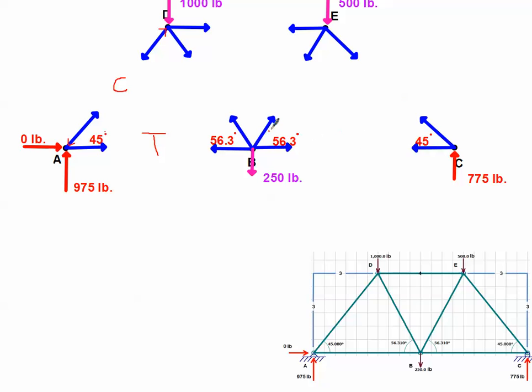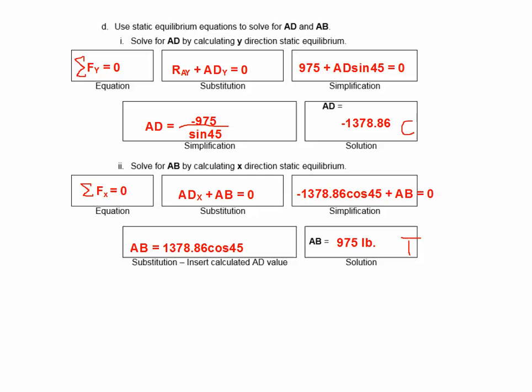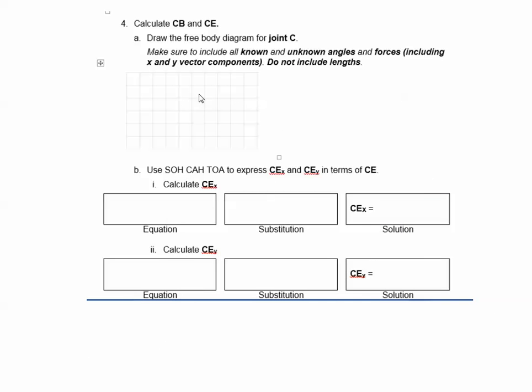I'm going to end part one now. This is about 15 minutes at this point. In part two, we're going to do the next step in our activity, which is going to be followed by CB. We're going to start at joint C for our next one. Go ahead and go to part two, and we'll see you soon.